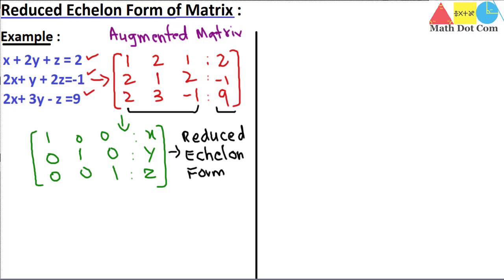In our previous lecture, we converted the given matrix only partially into row echelon form and then had to solve again to find x, y, and z. But here, we will get the values of x, y, and z directly after converting the augmented matrix into reduced echelon form. Let's start step by step.